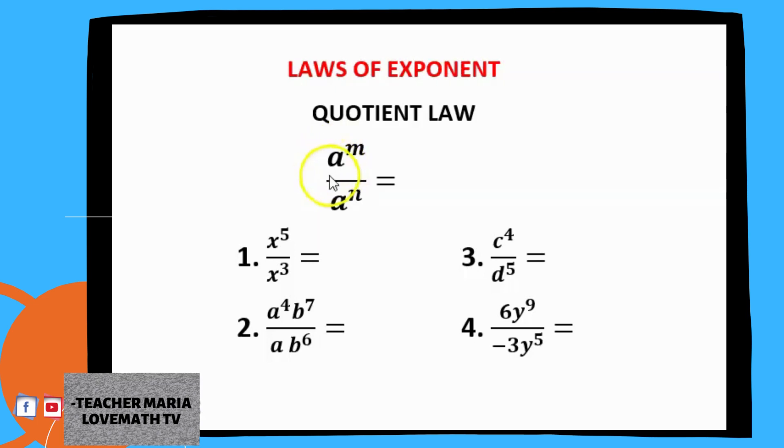Let's try to do it. If we have a raised to m divided by a raised to n, since they have common base, we are just going to copy it. So we have a and then we have to subtract the exponent m minus n.